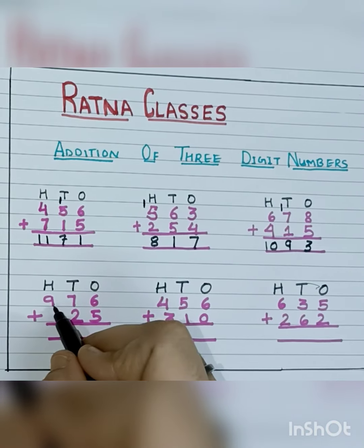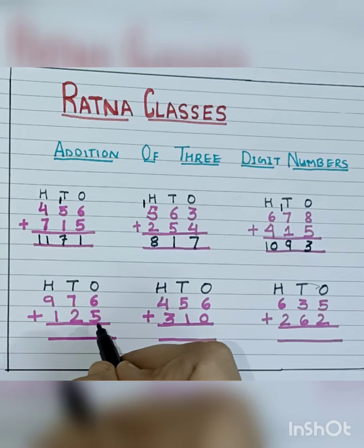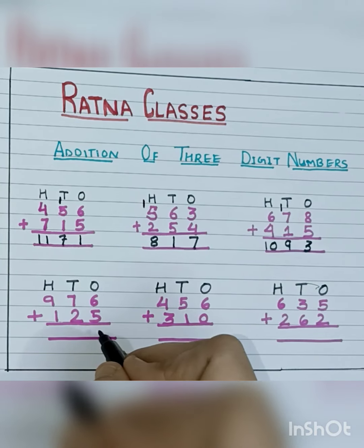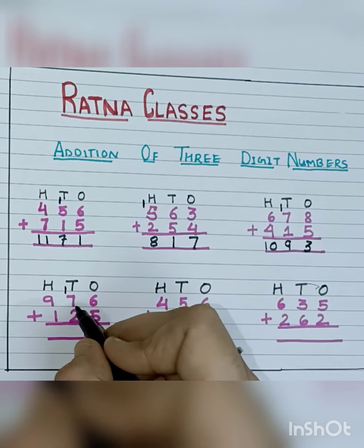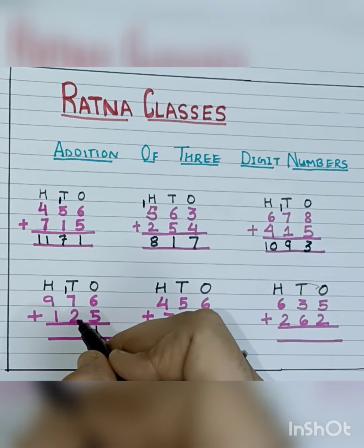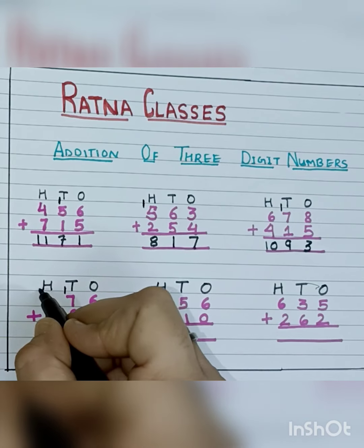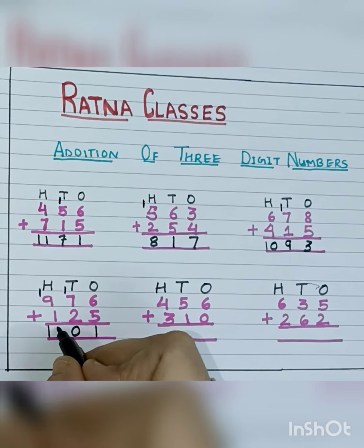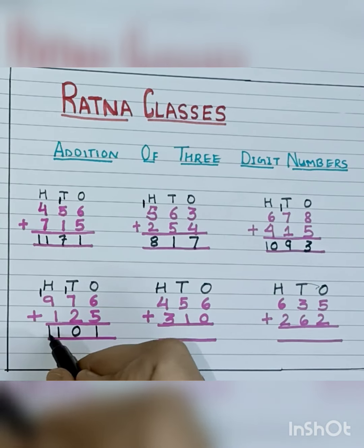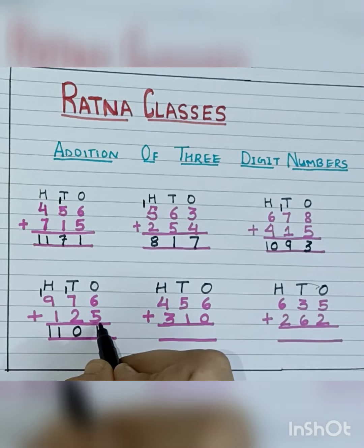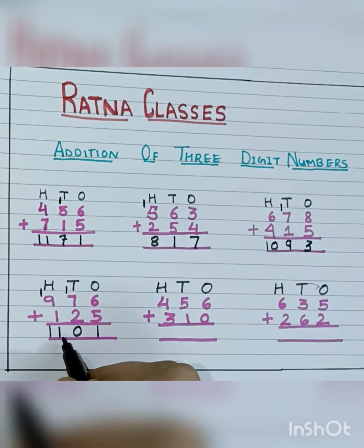So let's solve the next number, that is 976 plus 125. First we will solve the 1's place: 6 plus 5 is 11. We write 1 here and take 1 carry over. 1 plus 7 plus 2 — 1 plus 7 is 8, 8 plus 2 is 10. So we write 0 here and take 1 carry over. 9 plus 1 is 10, plus 1 carry is 11. So we write both digits here. Our answer: 976 plus 125 is equal to 1101.